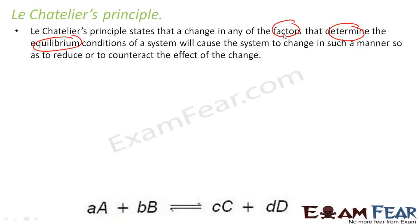They are the factors which determine equilibrium. But something like a catalyst doesn't determine the equilibrium. It doesn't matter which catalyst you're adding, the equilibrium won't be impacted. There are some factors which determine equilibrium. If you change any of those factors, the system will react in such a way that it will counteract the effect of the change.